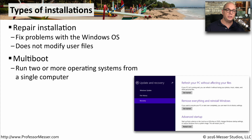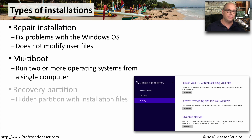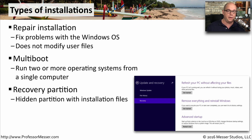Many operating systems also allow you to install multiple versions of operating systems onto the same computer. This is called multi-boot or dual boot, and in this way you can start your computer and then decide what operating system you'd like to run during that session. During the installation, Microsoft Windows likes to create a recovery partition on a drive where it installs operating system files that can be useful if you're running into problems with the primary OS.